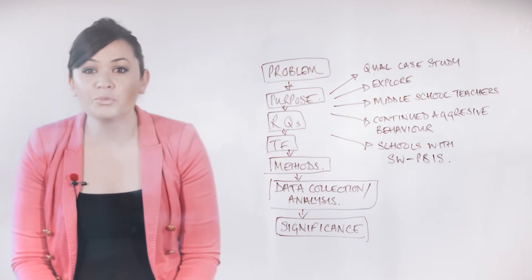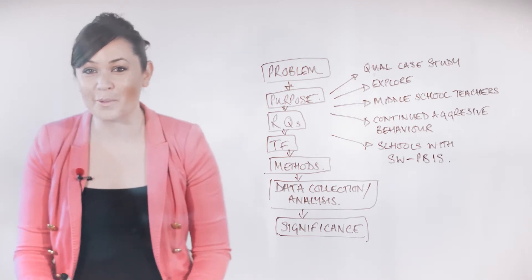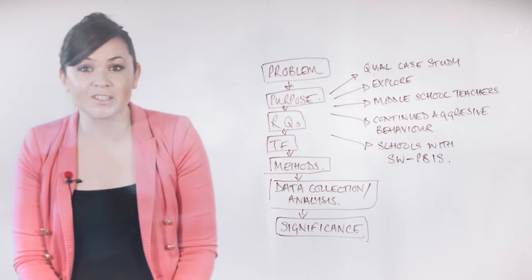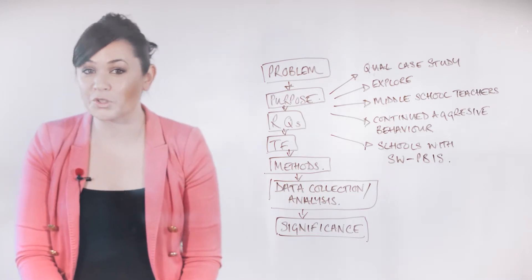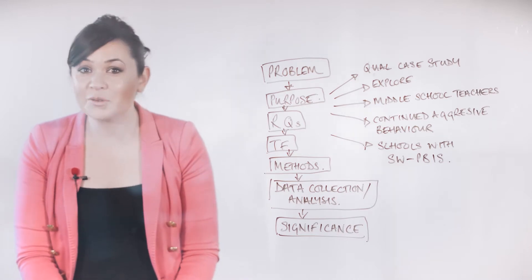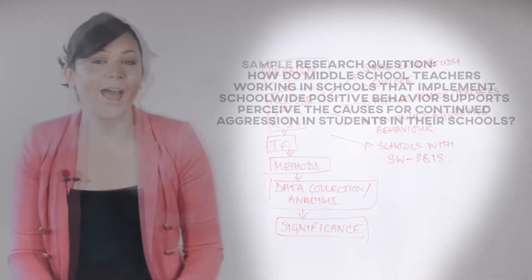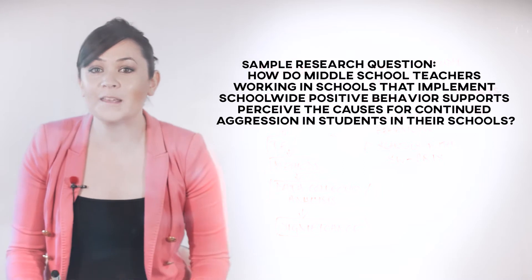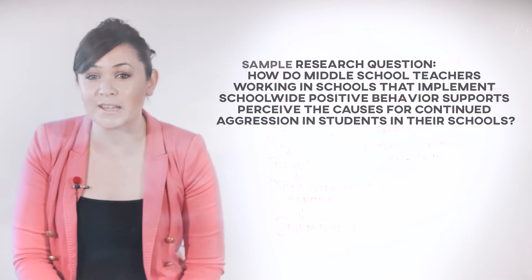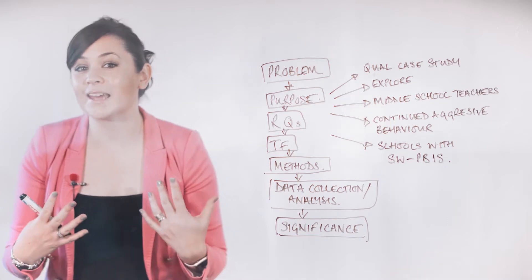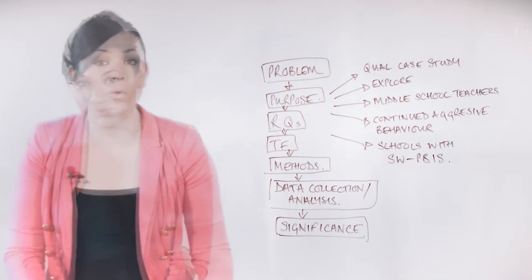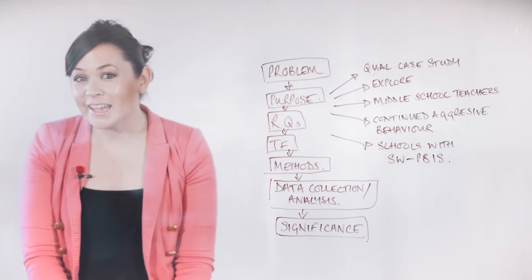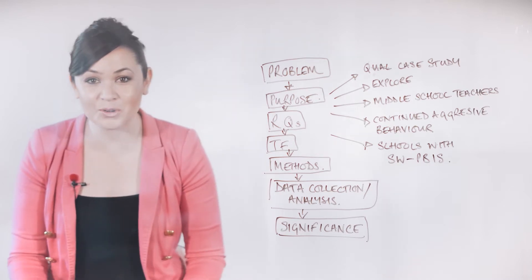Next in the alignment chain are the research questions, which must align with your purpose in terms of the variables or phenomena of interest that you plan to study. You must also use phrasing in these questions that is consistent with the method and design for your study. In the working example, an appropriate research question might be: 'How do middle school teachers working in schools that implement school-wide positive behaviour supports perceive the causes for continued aggression in students in their schools?' This question maintains consistent focus on the perceptions of middle school teachers, specifies that school-wide positive behaviour supports are in place, and continues with the focus on causes for continued aggression in some students.